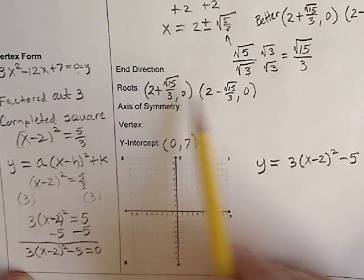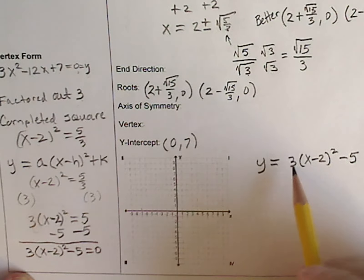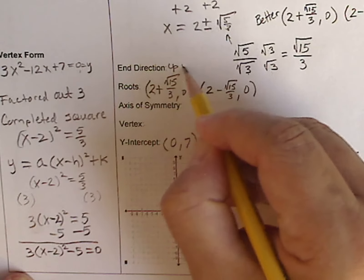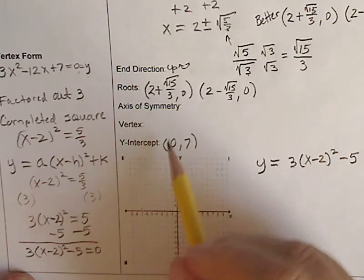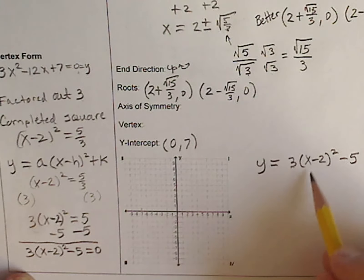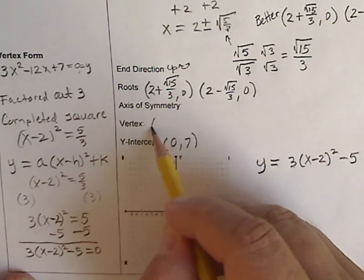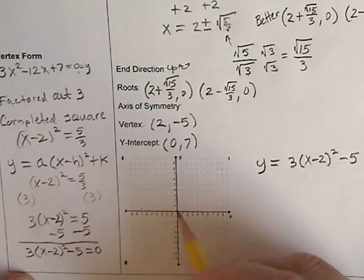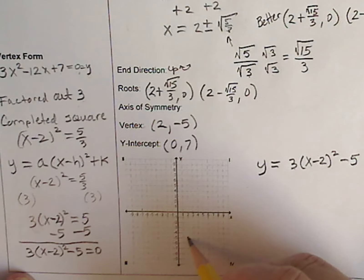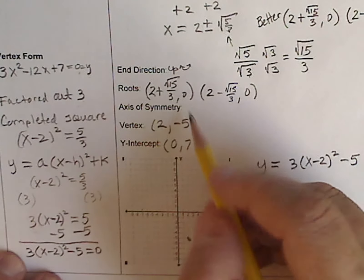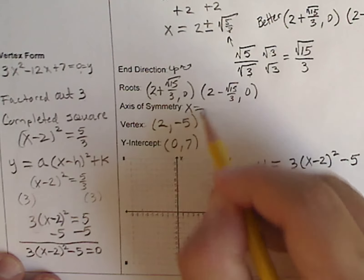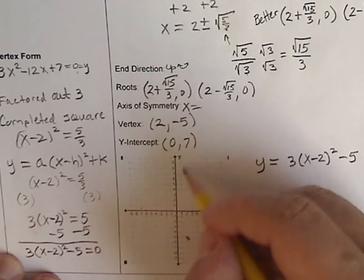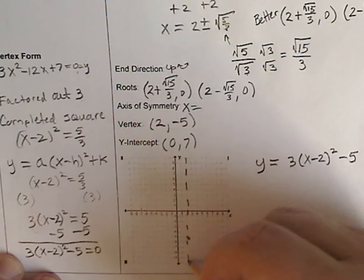We had found our roots previously in video 2. We know that this is positive, so the end directions are going up. The vertex is easy to find, because this is in vertex form. What does x have to be to make this 0 out? A positive 2. There's a negative 5, so my vertex is at 2, negative 5. The axis of symmetry is a vertical line, so it's an x equals. This is going to go right here, so x is always equal to 2.